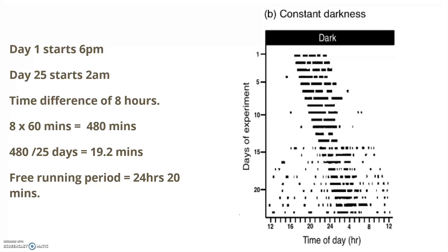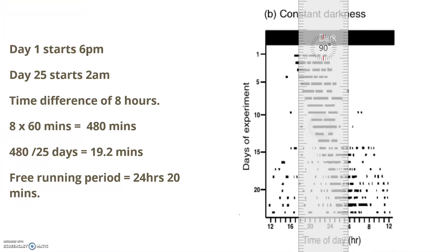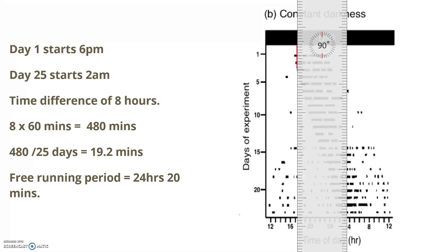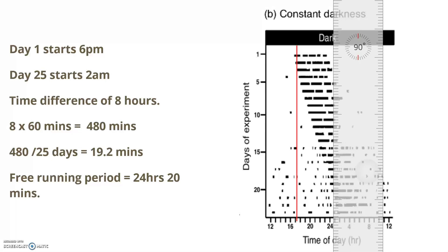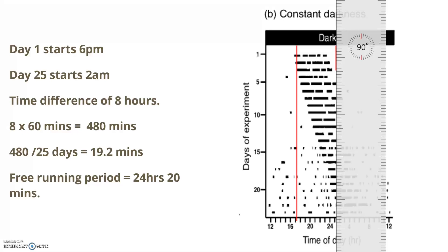You may get asked to calculate the free-running period — this is the cycle of behavior without the external cue. To do this, draw on your graph. You need to work out how much later the activity has started over the 25 days in total. My recommendation is to draw a line — I put a ruler in here — and draw a line where the activity starts on day one, and then draw a second line on the last day of activity to see where that starts as well.